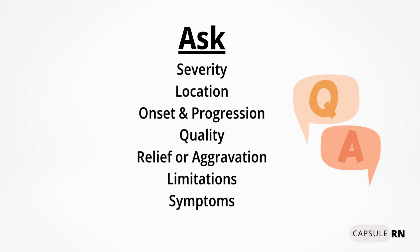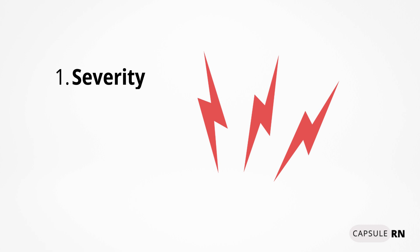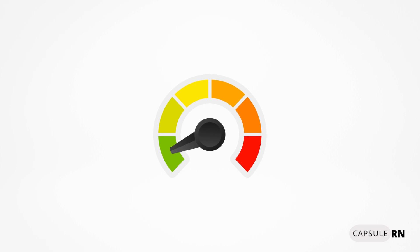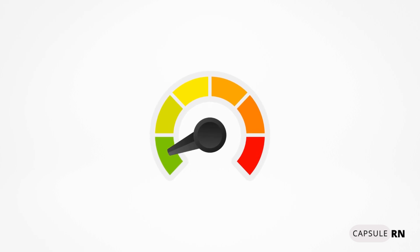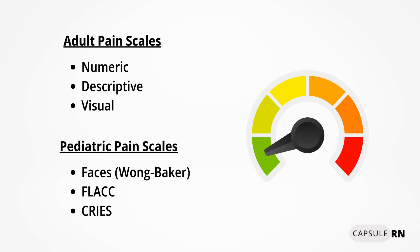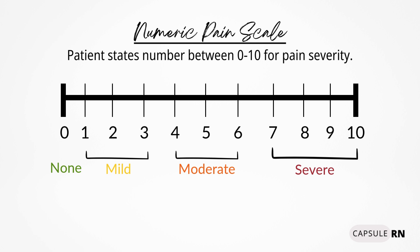Let's talk about each of these categories. First, there is pain severity. When discussing severity of pain, we are talking about finding out how bad a patient's pain is according to them. To discover this, you will want to use a pain scale. There are a variety of pain scales that can be used to assess a patient's pain level, some geared more toward adult patients or older children around 8 and above, and some toward younger pediatric patients. The most commonly used is the numeric pain scale, in which a patient states a number between 0 and 10. A 0 means no pain, a 1 to 3 means mild pain, a 4 to 6 means moderate pain, and a 7 to 10 means severe pain.